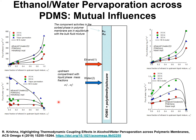To set the scene for this presentation, let us examine two sets of experimental data from two different authors for ethanol-water pervaporation across a PDMS membrane. The fluxes of ethanol and water are plotted against the mass fraction of ethanol in the liquid mixture in the upstream compartment. We note that the ethanol flux is reduced significantly as the proportion of water in the fluid-phase mixture in the upstream compartment is increased.